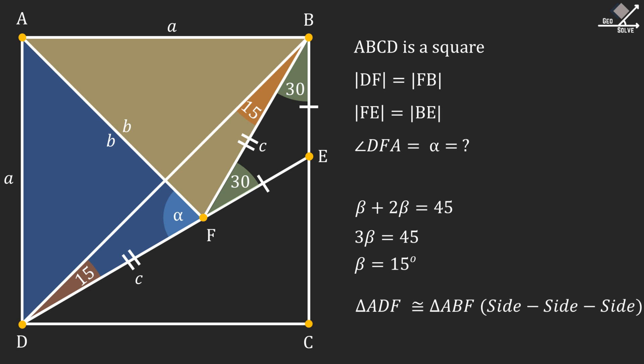And this means that corresponding angles must also be equal. So we can say that angle AFB must also be alpha. And now angle alpha can be calculated as 75 degrees. And that will be our answer.